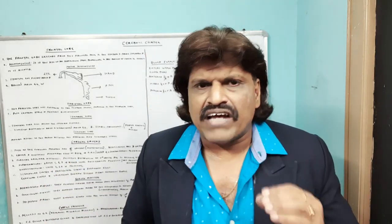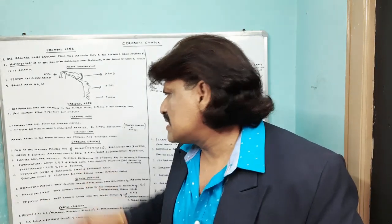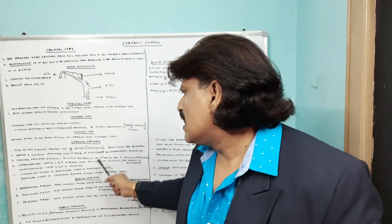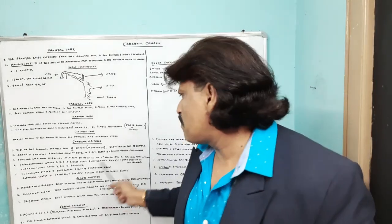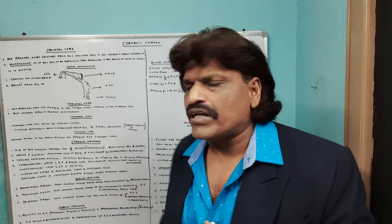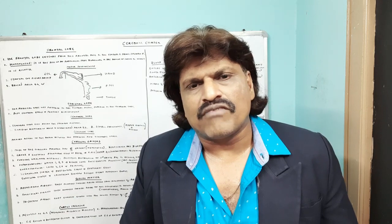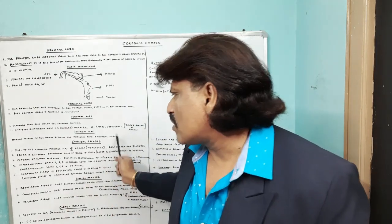Layer five is very important because it contains the pyramidal Betz cells; the corticospinal tract originates from the fifth layer of the cerebral cortex. Layer four is important for sensory perception because the thalamocortical projections go to layer four. So among the six layers, layer five is important for motor function and layer four is important for sensation.